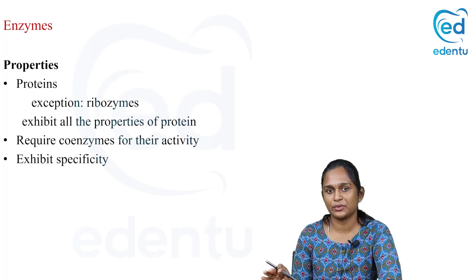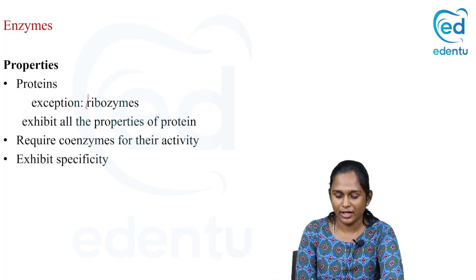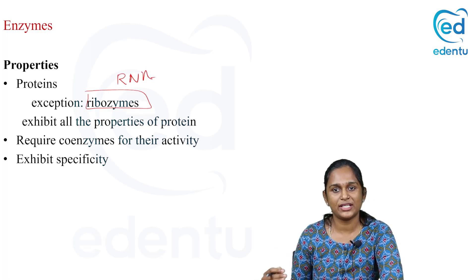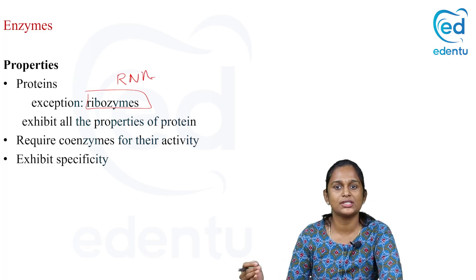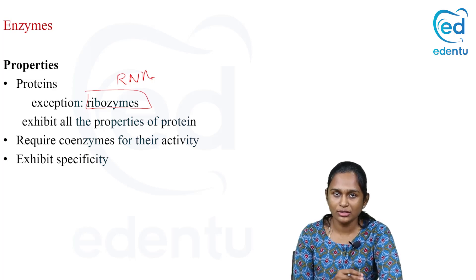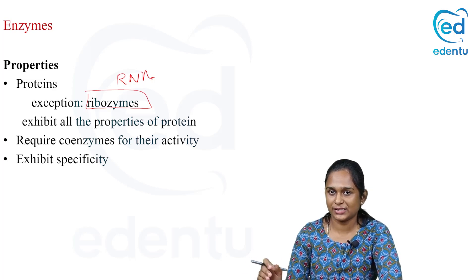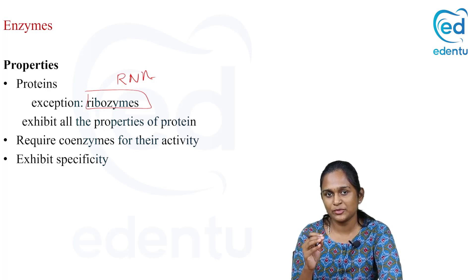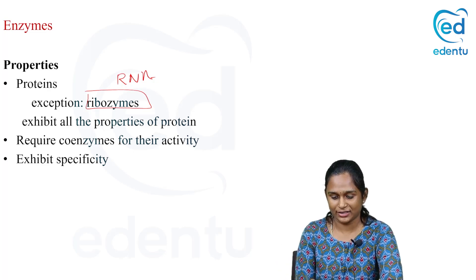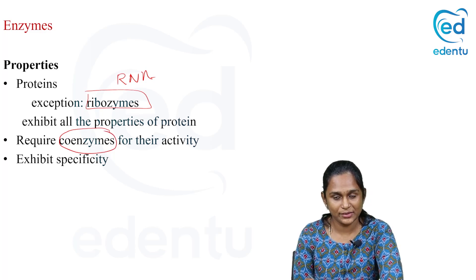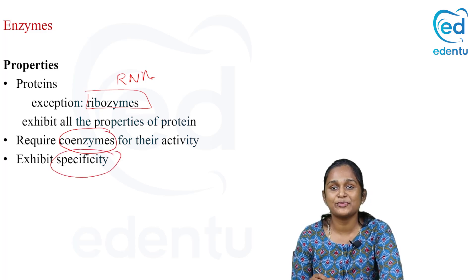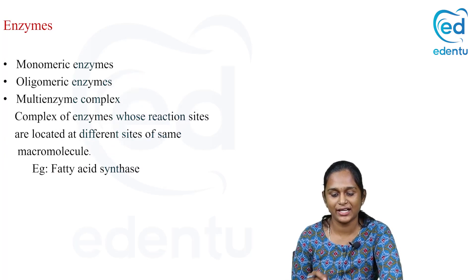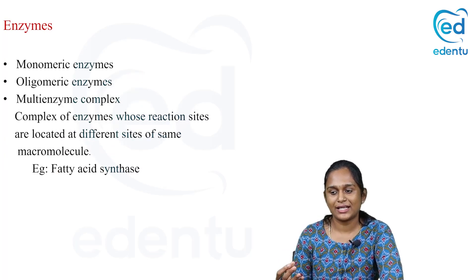What are the properties of enzymes? All enzymes are proteins, except ribozymes — ribozyme is an RNA. So all enzymes are proteins except ribozymes, and they exhibit all the properties of a protein. These enzymes require coenzymes for their activity, and they exhibit specificity — they are specific for their substrate.